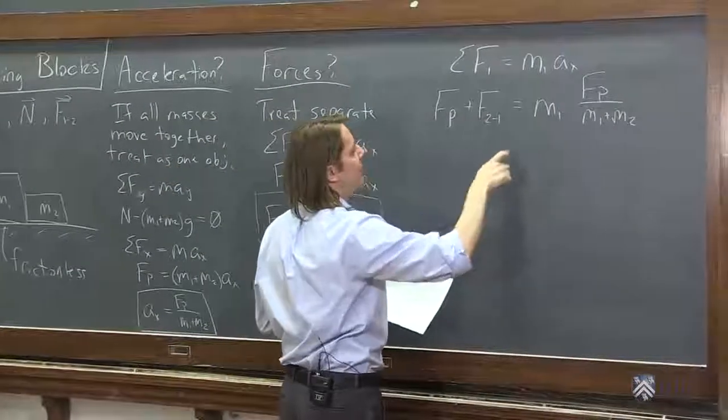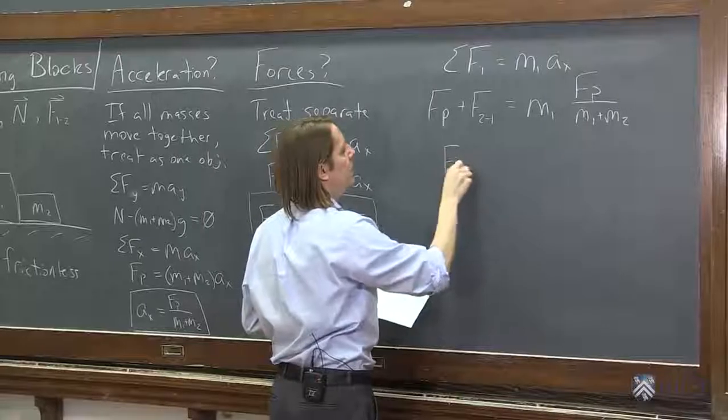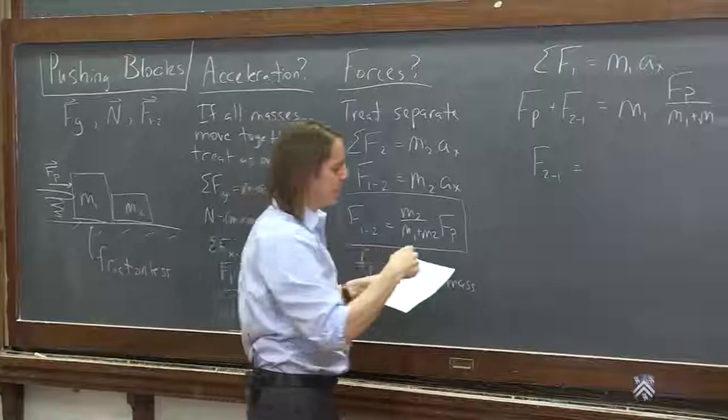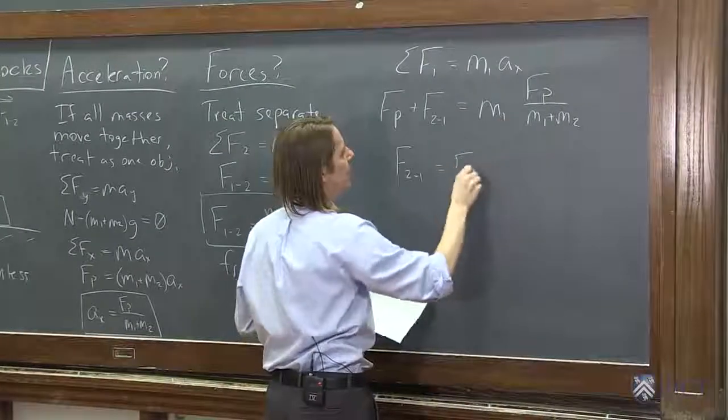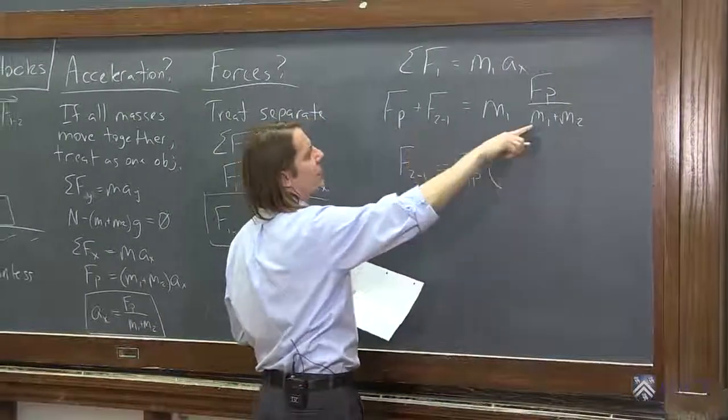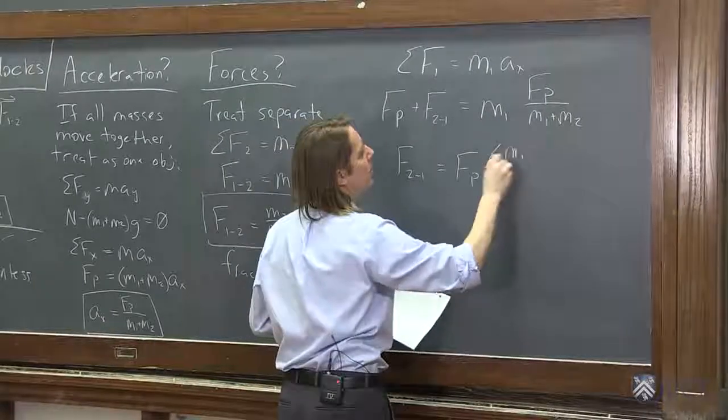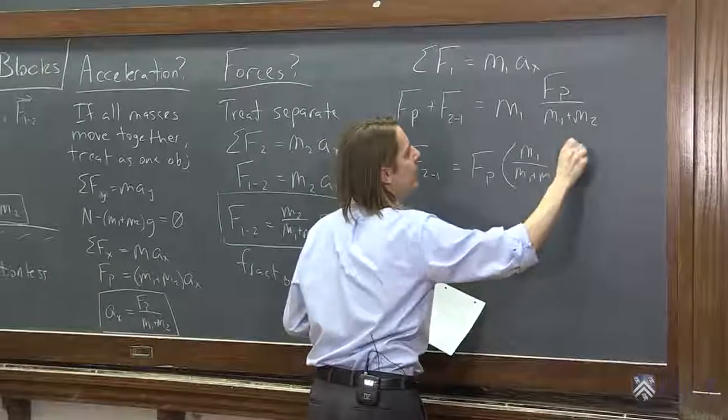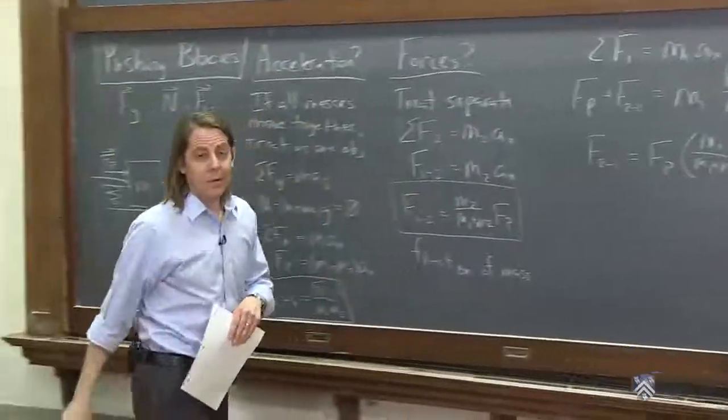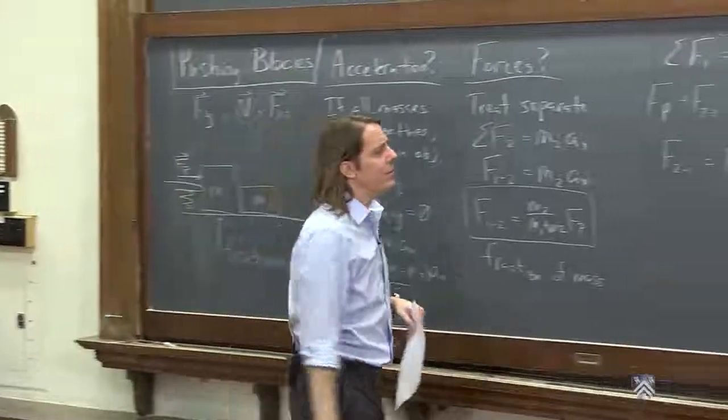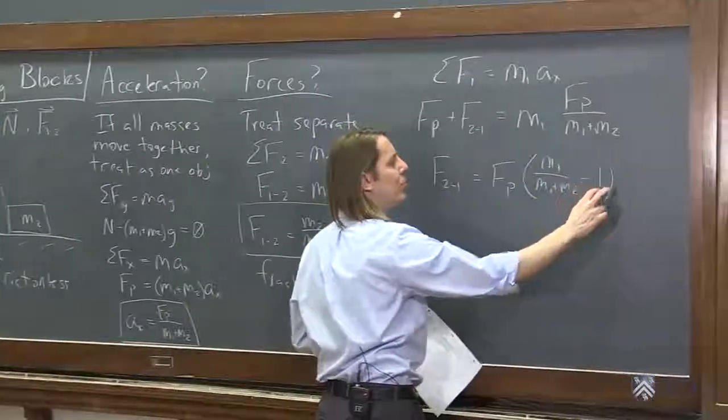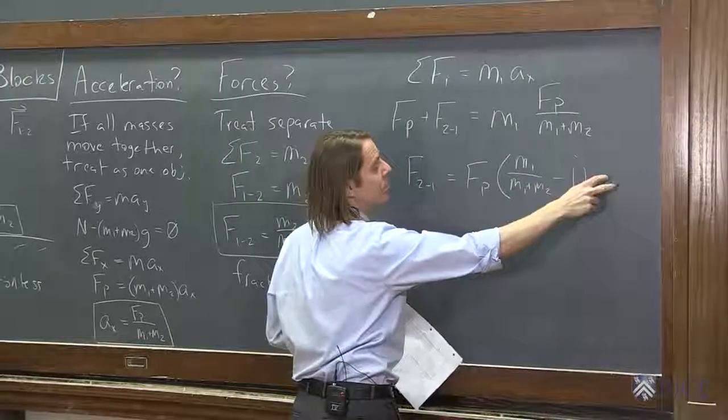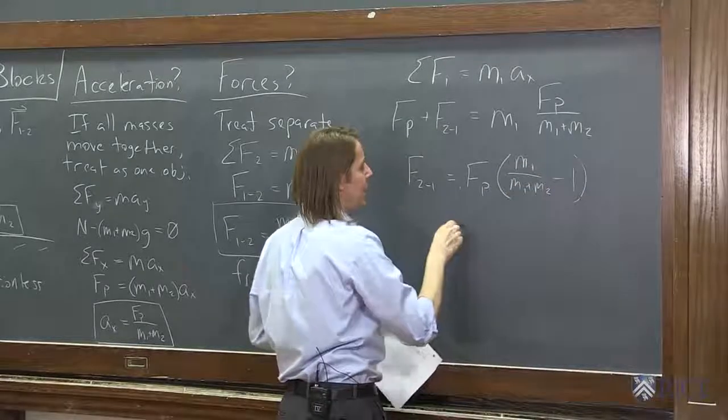So if you want to figure out what is the force of 2 on 1, then we just bring this over here. Fp comes over here, and you factor out an Fp. And you would get Fp, and it looks like you'd have M1 over M1 plus M2 minus 1, because you brought that 1 Fp over. You could call this M1 plus M2 over M1 plus M2 to get a common denominator. And this would be M1 minus M1 minus M2. M1 minus M1 goes away. And you say, wait a minute, why does F21? I thought it would depend on M1, not M2.